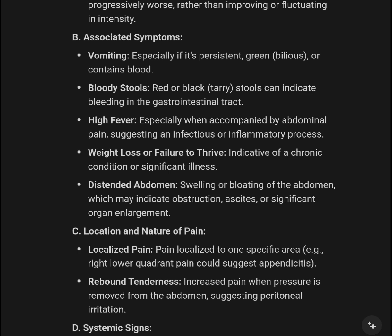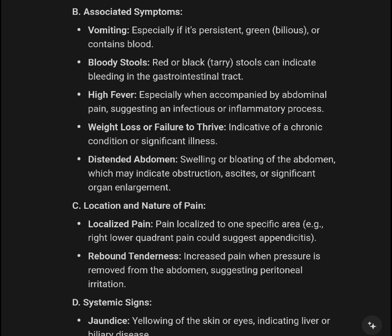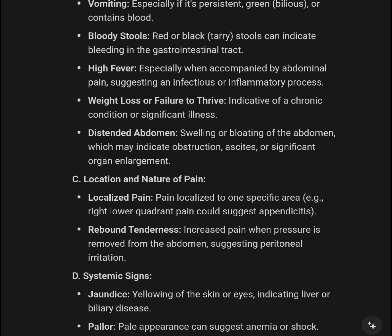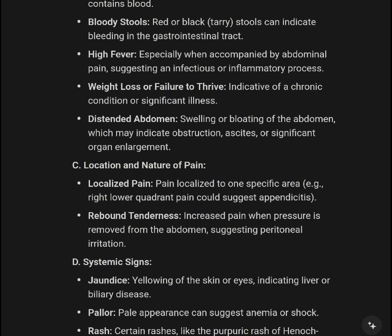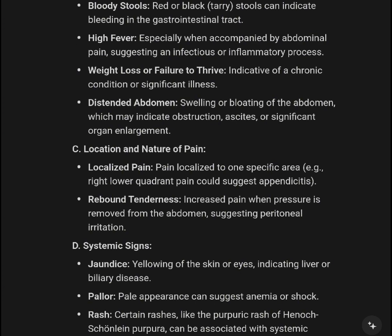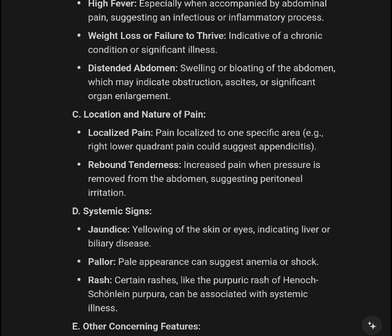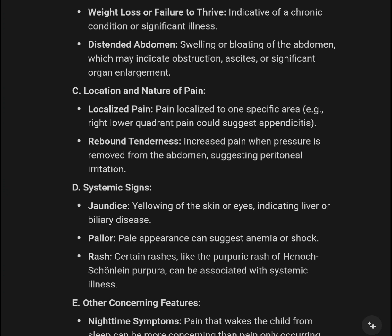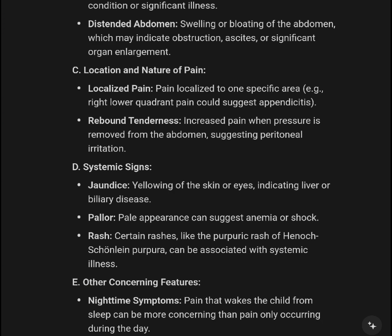Also, vomiting — especially if persistent, profuse, or containing blood, whether red or black — can indicate bleeding in the gastrointestinal tract. High fever, especially when accompanied by abdominal pain, is suggestive of an infectious or inflammatory process. Weight loss, failure to thrive, or significant distension of the abdomen may indicate obstruction or significant organ enlargement.